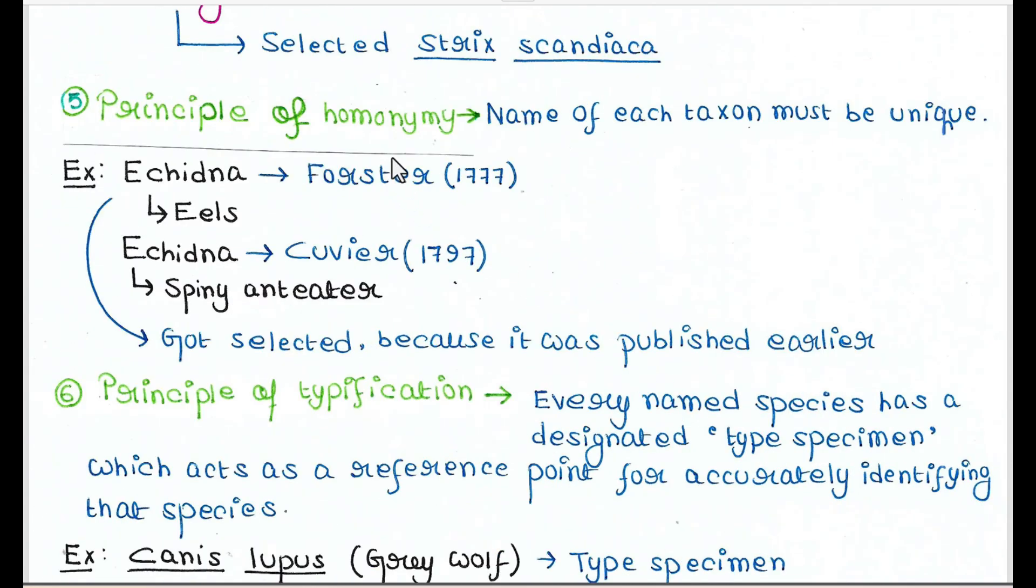Next is principle of homonymy. So name of each taxon must be unique. So in 1777, Forster gave the name Echidna to the spiny anteater. So each taxon must be unique, right? So Echidna for eels was selected since it was published earlier in 1797. And this name was rejected for spiny anteater since it was named later.